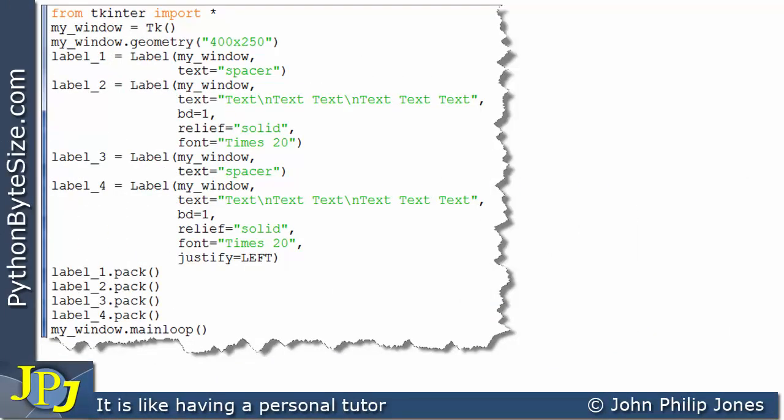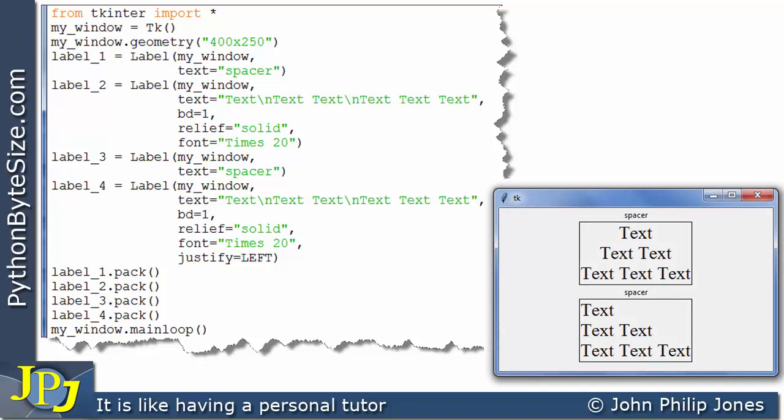This program shows one amendment from the code we've just considered. The amendment is shown here, where we now have justify assigned LEFT, where we had RIGHT a moment ago. Now, when this program runs, what we're going to see is this. Have a look at the text in this label. You can see it's all been justified to the left.